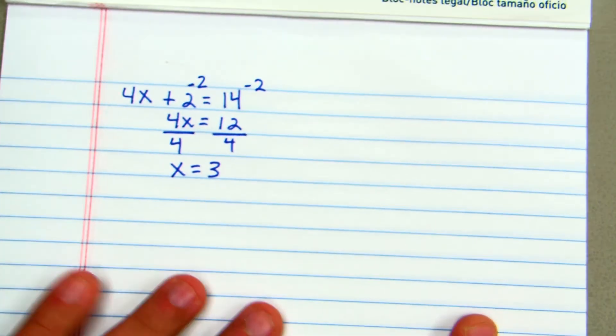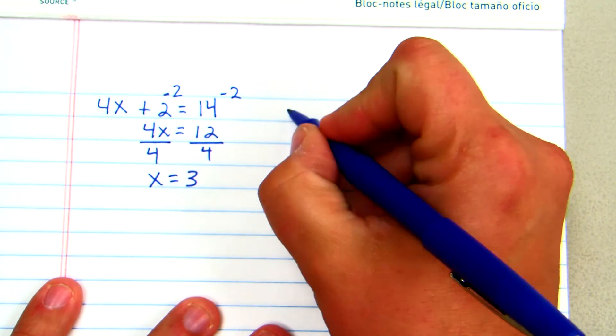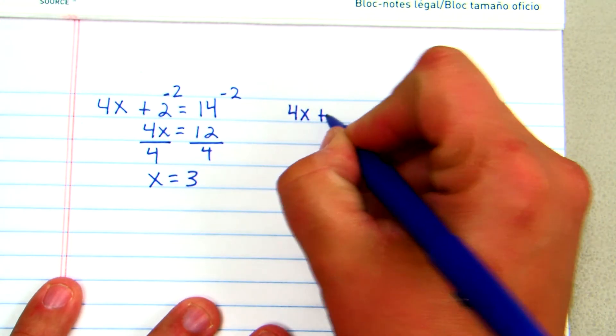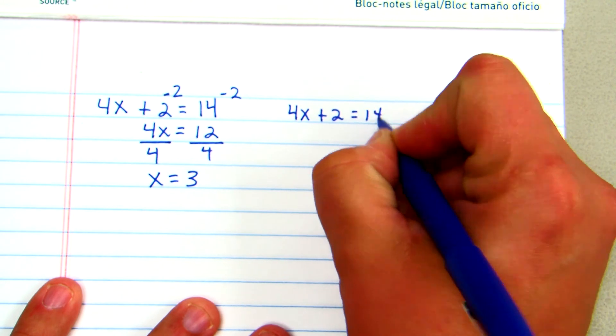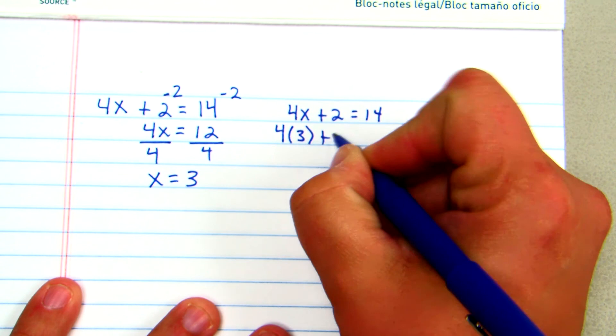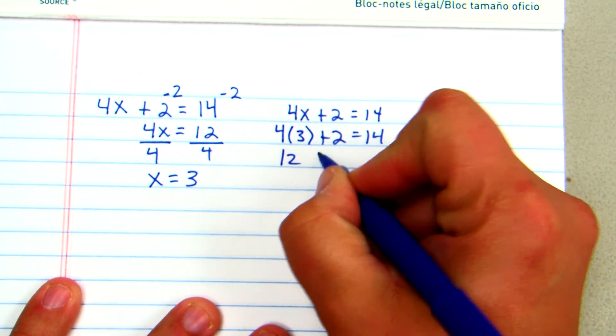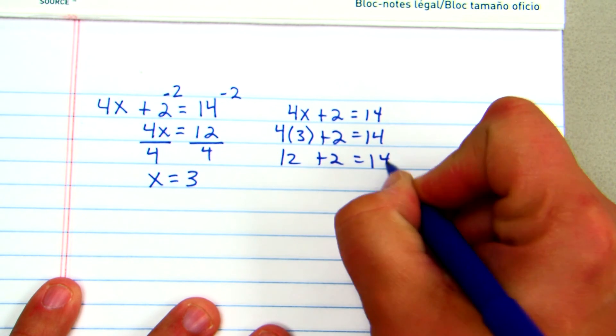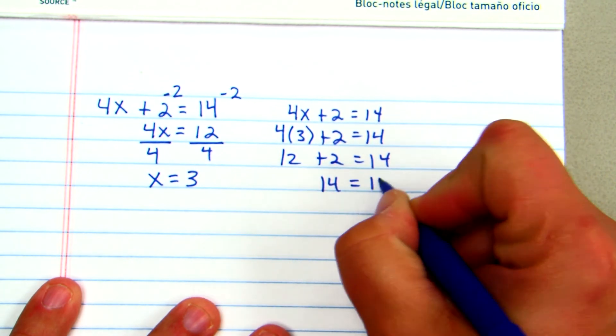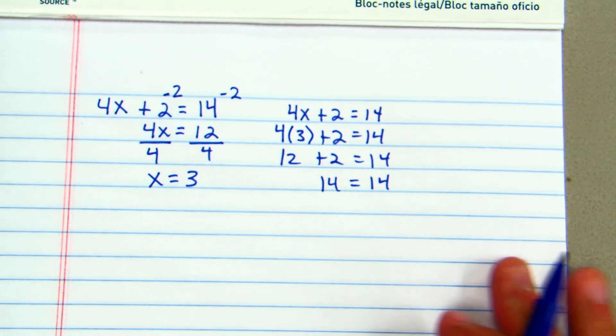Now it's really important on any of these types of equations that you can check. So our original equation was 4x plus 2 equals 14. So if I take this 3 and sub it in for the x, and then I just evaluate the expression 12 plus 2 equals 14, 14 is equal to 14, and that checks out and that works.